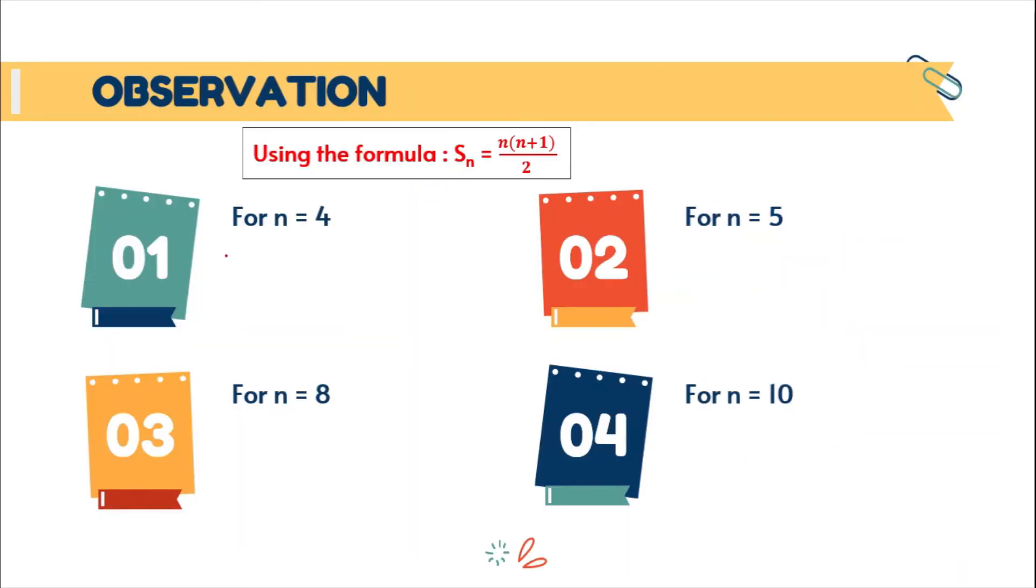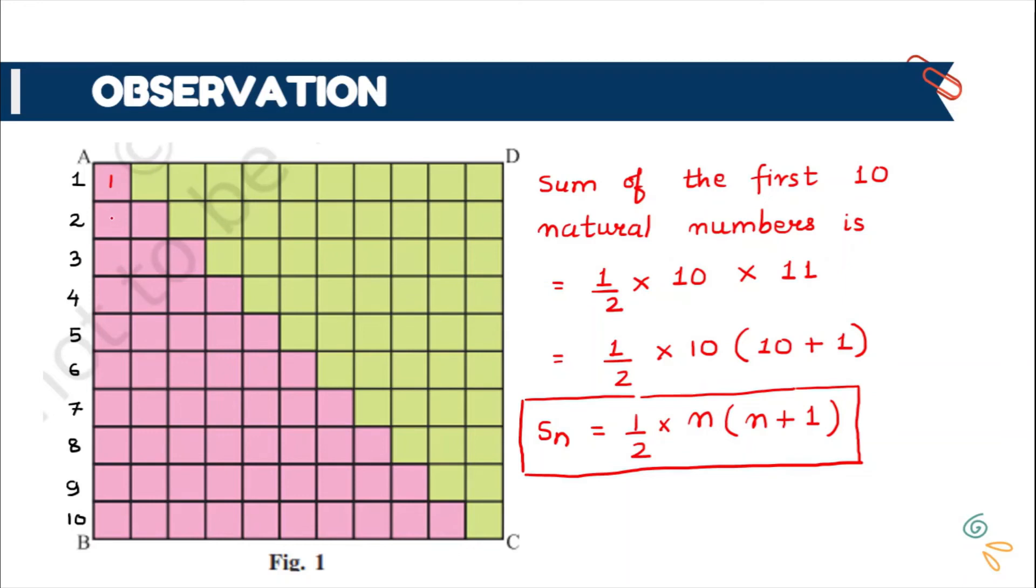So for n equal to 4, that means sum of the first 4 numbers will be 4 multiplied by (4 plus 1) which is 5, upon 2. So this will give us 10. So for first 4 boxes, counting 1, 2, 3, 4, 5, 6, 7, 8, 9, 10. So we know that sum of the first 4 natural numbers is 10 and again here when we will count these pink boxes till 4th stair, the counting is 10.